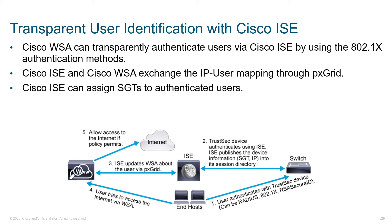The WSA can also transparently authenticate users via ISE by leveraging 802.1x. ISE and the WSA exchange IP-to-user mappings through pxGrid. We can also leverage Cisco ISE to assign Security Group Tags (SGTs) to authenticated users. These different approaches let us take user authentication information and apply appropriate policies to network infrastructure based on group membership, security posture, patch status, antivirus currency, and update compliance. ISE is the grand gatekeeper for where users are allowed to go, and it extends controls to email via ESA and web content via WSA.